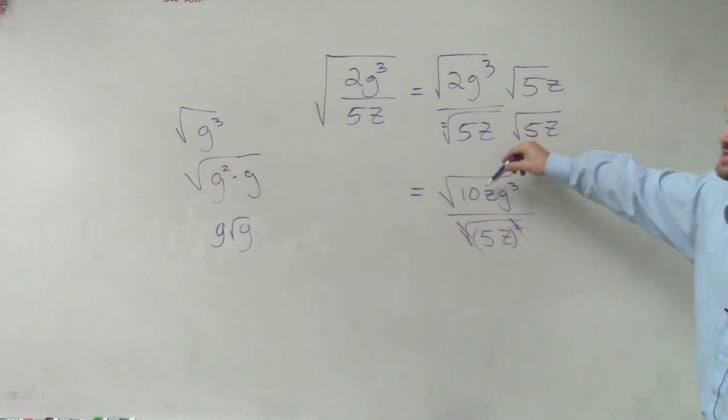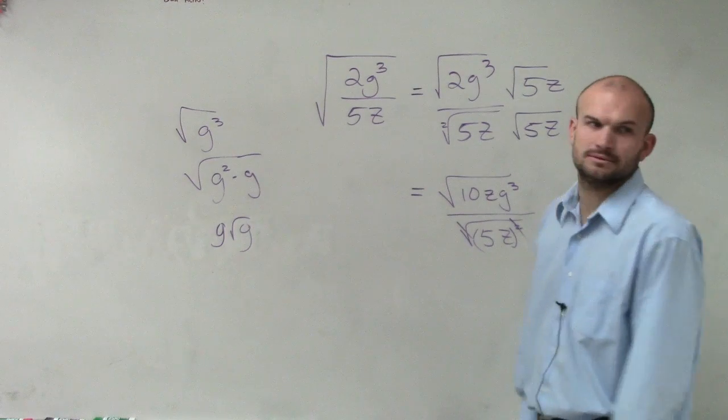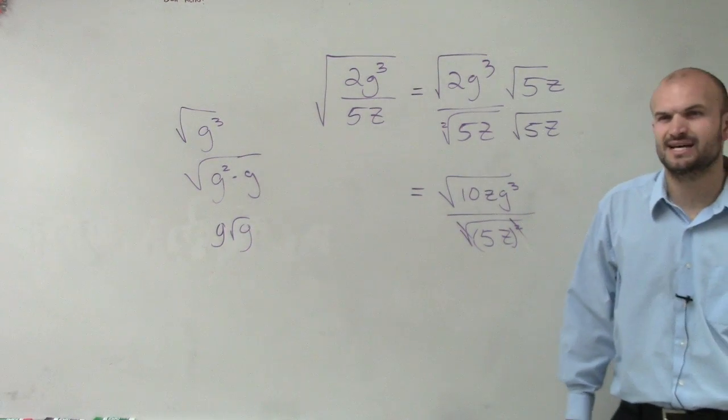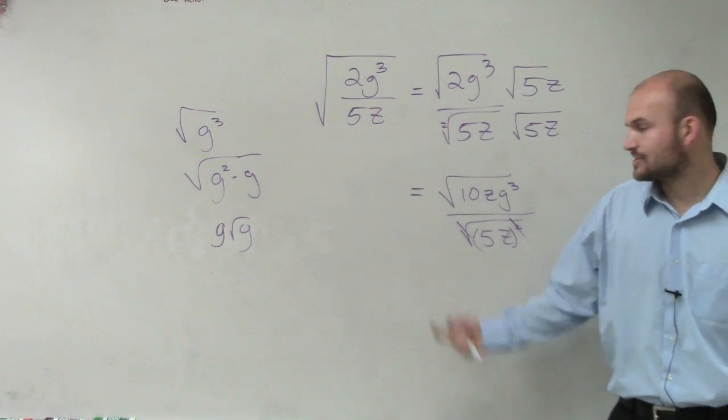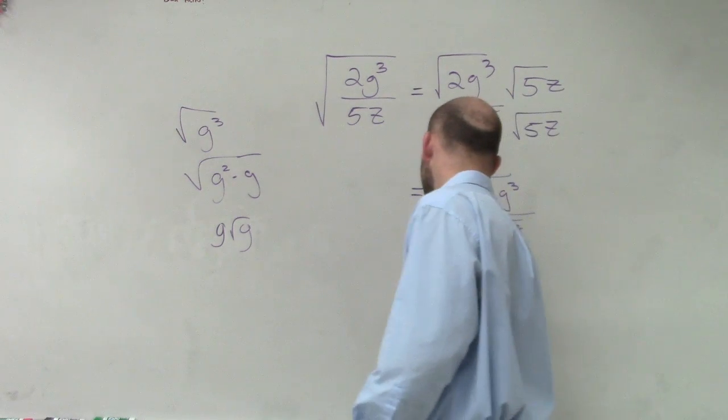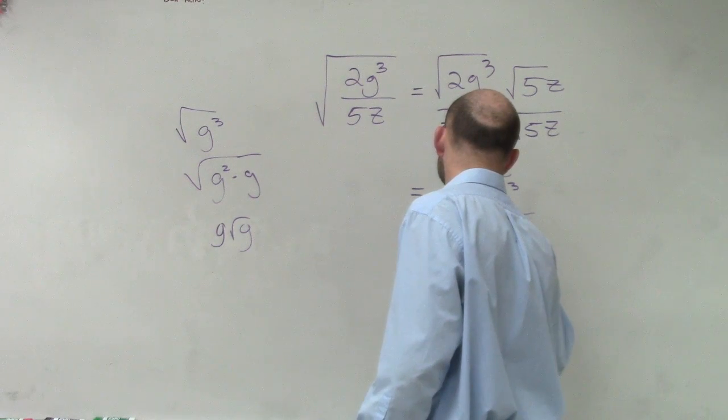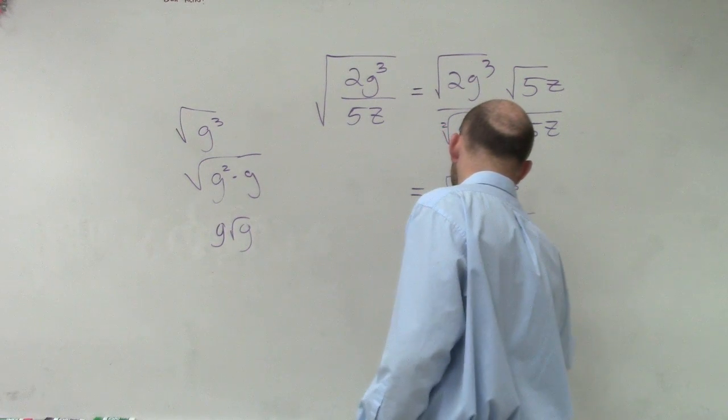And then also, can I simplify the square root of 10? Is there a square number that divides into 10? No. So therefore, we can't simplify the square root of 10. So my final answer is just going to be g square root of 10zg divided by 5z.